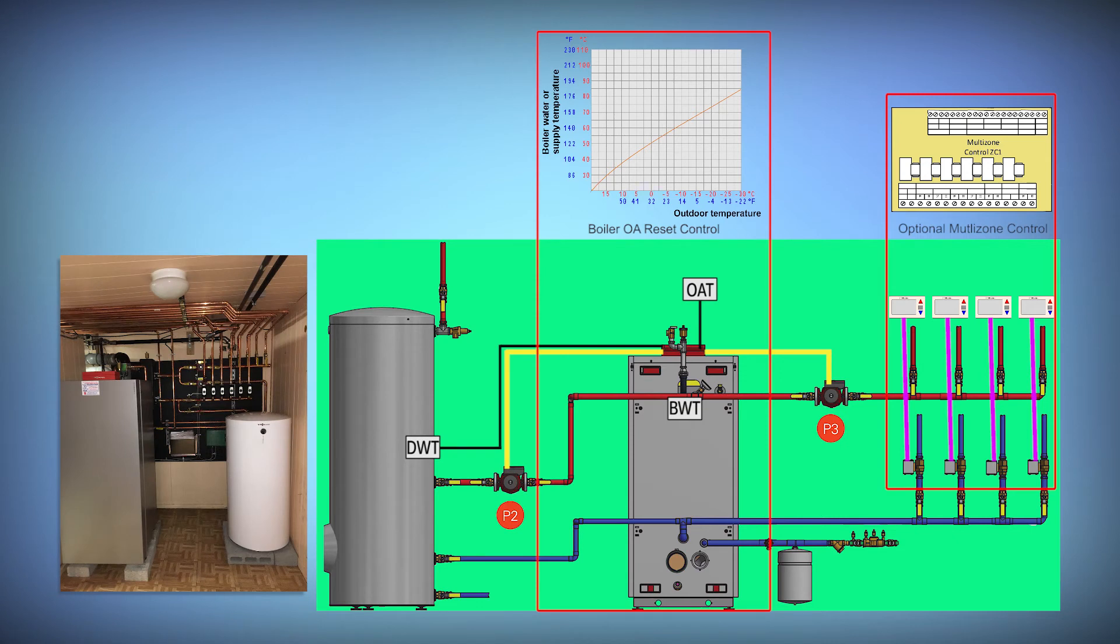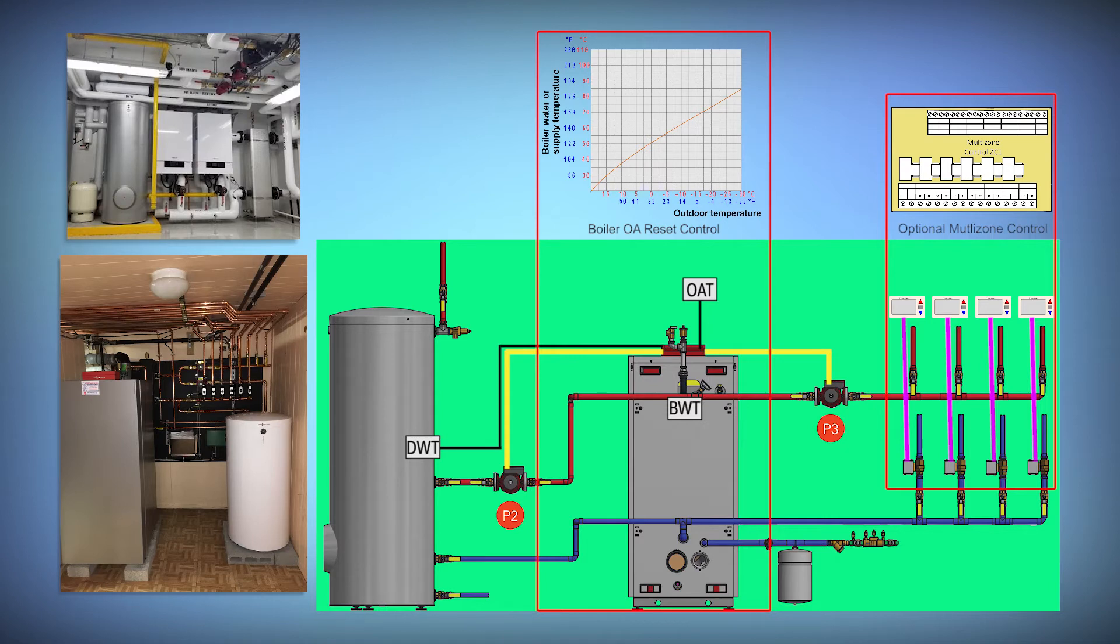It also means that the boiler can do the job at a lower firing rate and because the high mass boiler we show here, the Vitacrossel 300 Cu3A boiler, is highly insulated, standby loss is minimal. The same would be true for Vitaden's 100 or 200 series low mass boilers with a properly installed primary loop.